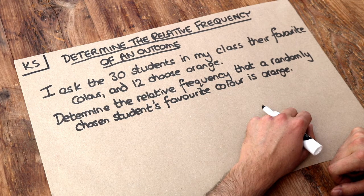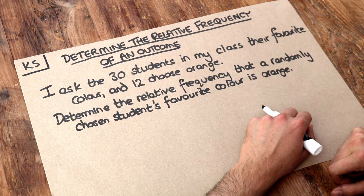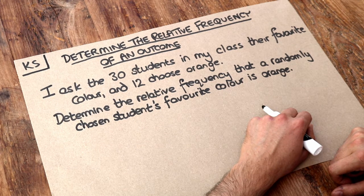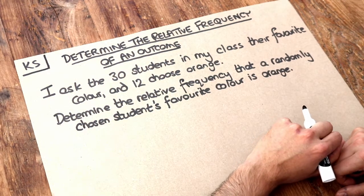Determine the relative frequency that a randomly chosen student's favorite color is orange. Now believe it or not there's pretty much no calculation required in this problem.